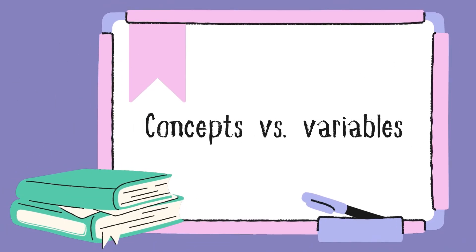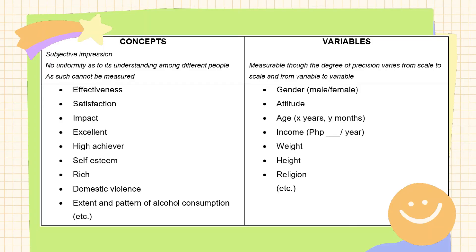Now, how are concepts and variables different? Concepts are actually mental images or perceptions and therefore their meanings vary markedly from individual to individual. Therefore, measurability is the main difference between a concept and a variable. Let us examine the table to better understand this difference. For concepts, they are subjective and there is no uniformity as to their understanding among different people, and as such cannot be measured. Examples include: effectiveness, satisfaction, impact, excellent, high achiever, self-esteem, rich, domestic violence, extent and pattern of alcohol consumption, and so on.